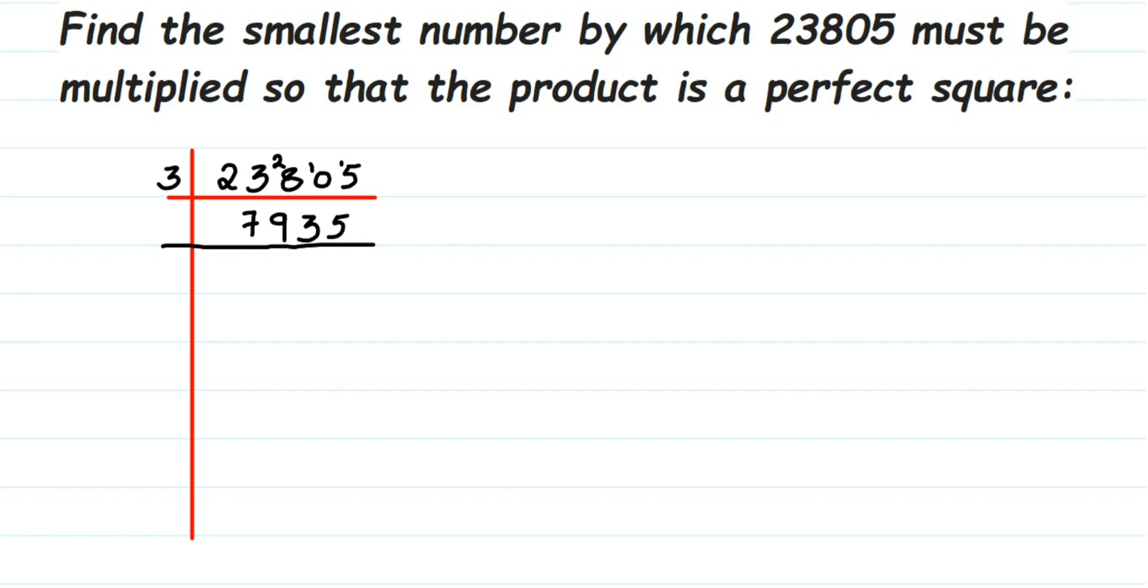This again goes into 3. 3×2 is 6, 1 is the remainder. Then 3×6 is 18, again 1 is the remainder. We got 13. 3×4 is 12, 1 is the remainder. Again we got 15. 3×5 is 15.